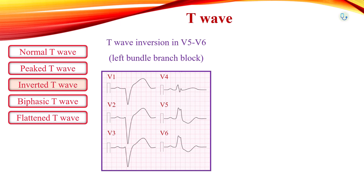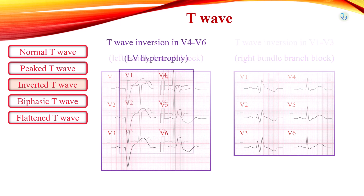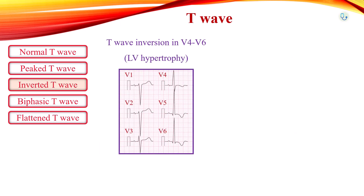This is an expected finding even in the absence of ischemia. Similarly, in right bundle branch block, T-wave inversion may be seen in right-sided leads V1 to V3. Left ventricular hypertrophy produces T-wave inversion in the lateral leads 1, AVL, V5, and V6, with a similar morphology to that seen in left bundle branch block, also known as the left ventricular strain pattern.